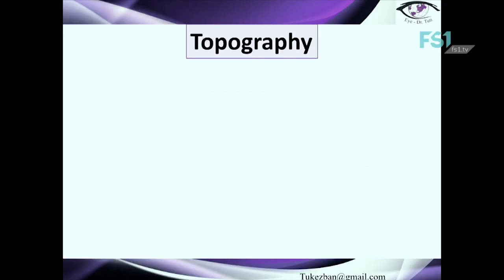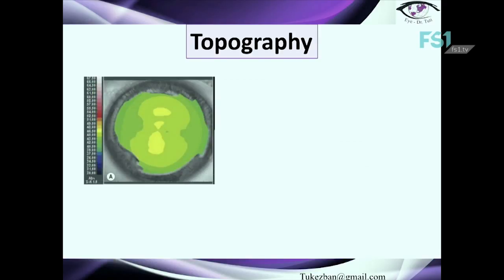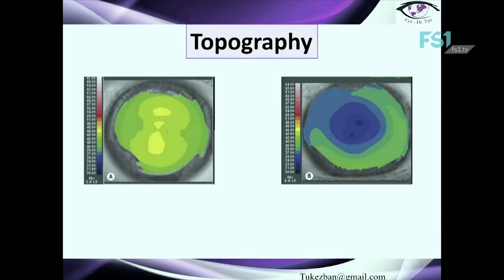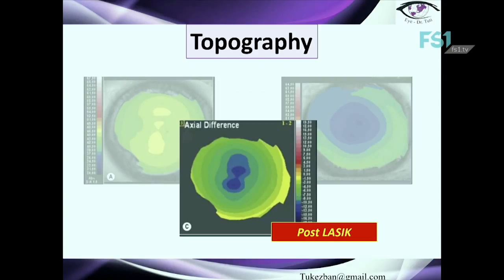Next, let's talk about the difference map. Here is a patient pre-operatively with oblique or with-the-rule corneal astigmatism visible on the pre-operative map. This is the same patient after LASIK surgery — the post-operative map. The device calculates the difference clearly between pre- and post-operative images and shows the characteristic of the toric ablation. So the difference map shows us the difference in curvature between measurements.